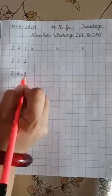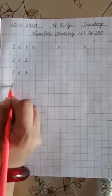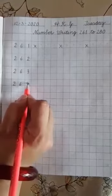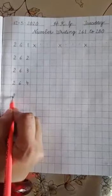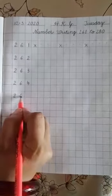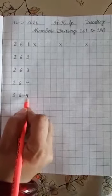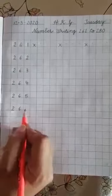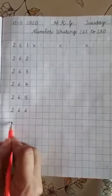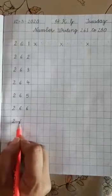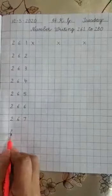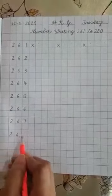263. After 263, write 264. Then 265. 266. 267. 268.